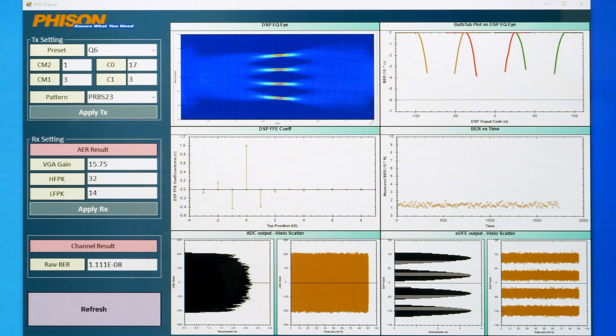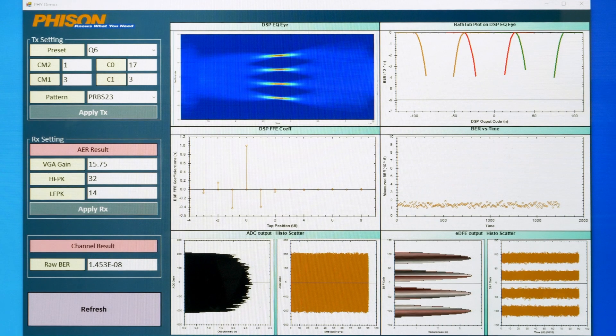As you can see, even with the long reach loss, the raw bit error rate before FEC reaches 1 in 100 million, well above the spec requirement of 1 in a million. This really goes to show how the unique design of PHISON's PCIe 6 SerDes PHY extends the transmission range for re-timers in high-loss conditions.